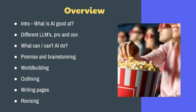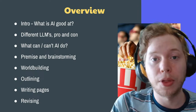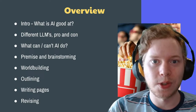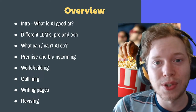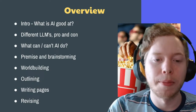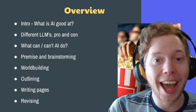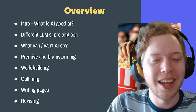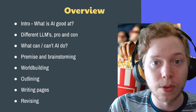Today we're going to look at what AI is good at, how to use it, and some different language models and the pros and cons. We're going to look at how to use it going through the steps of writing — starting with premise and brainstorming, which is actually among its strongest suits. We'll move from that into world building, almost like a minigame where the AI asks you questions so you can build a more comprehensive picture of the world you're creating. We'll also look at outlining, writing pages, and revising.